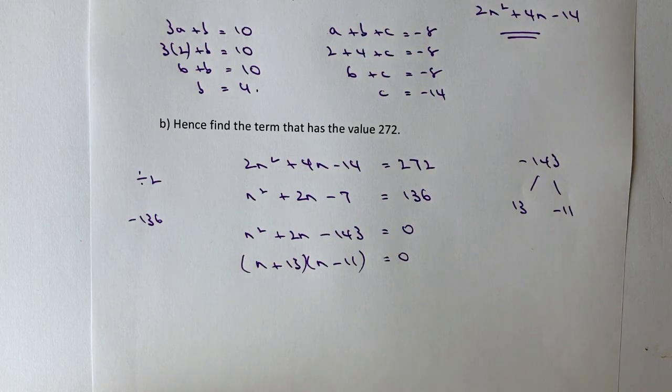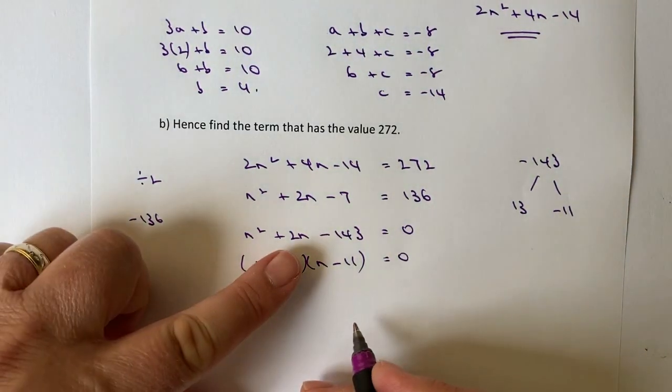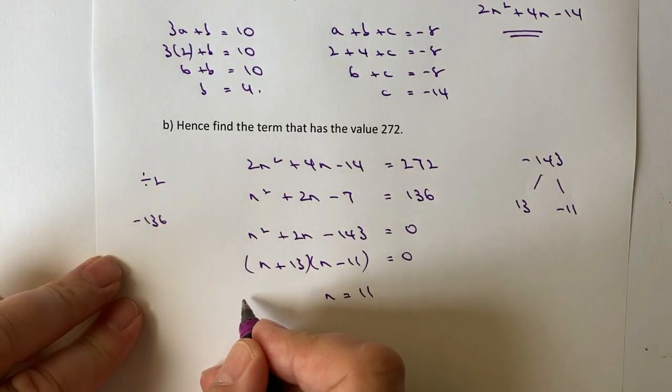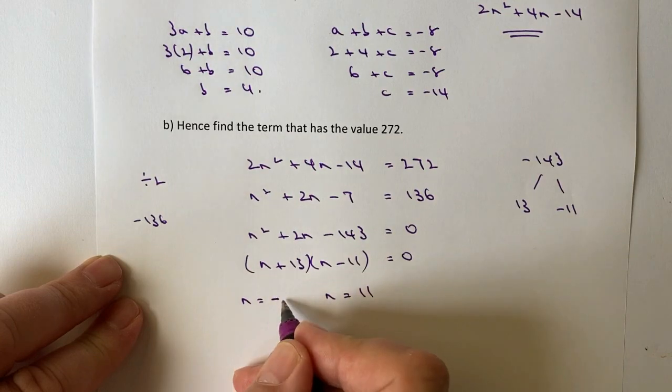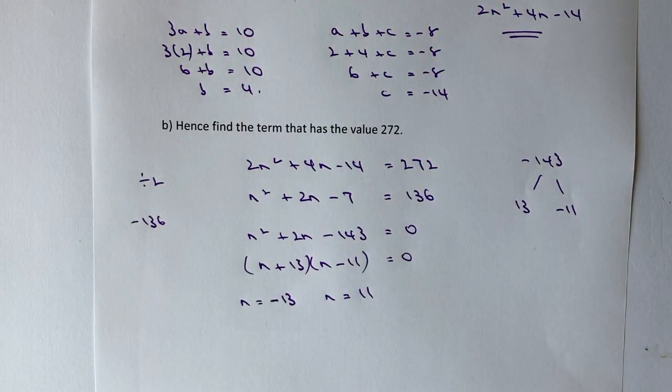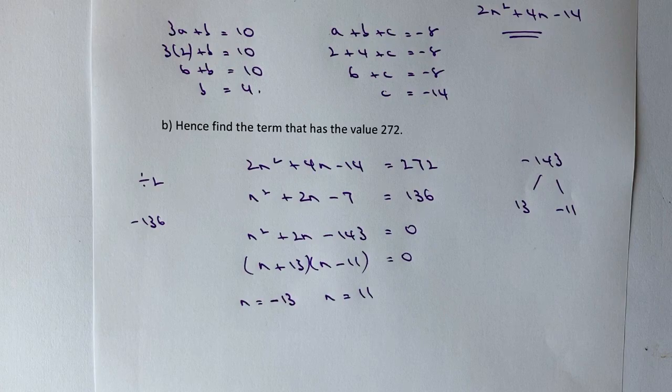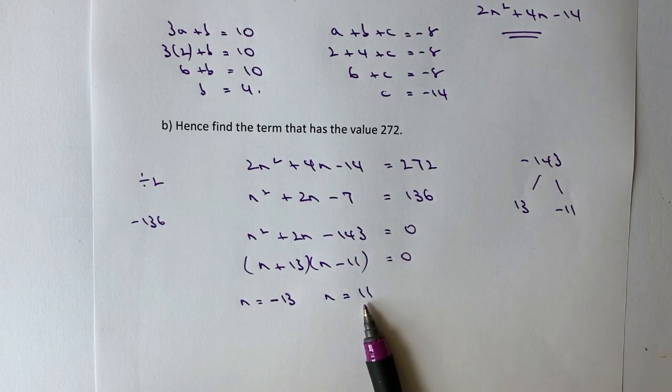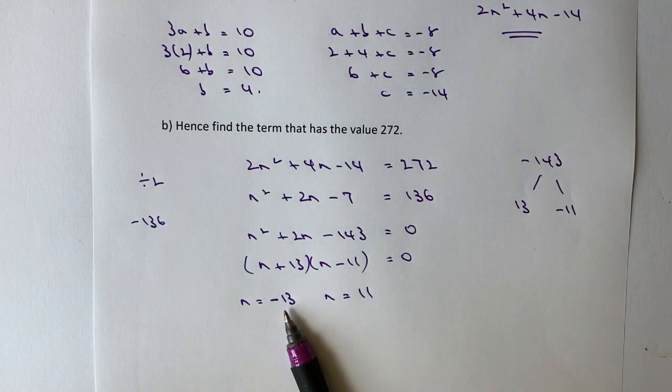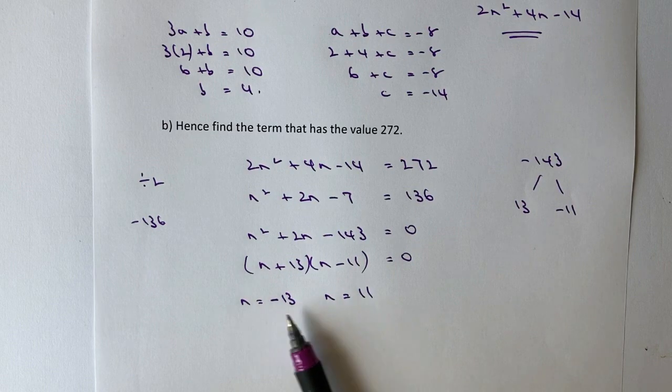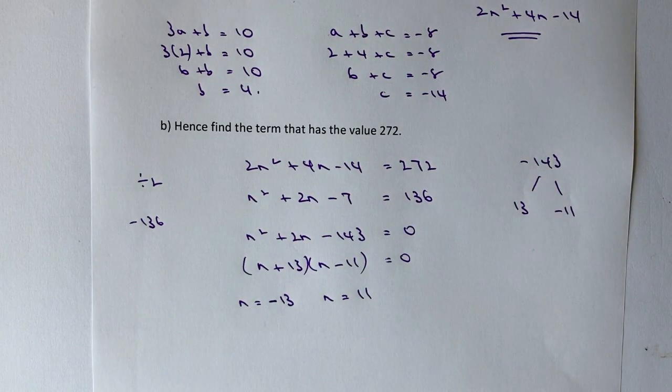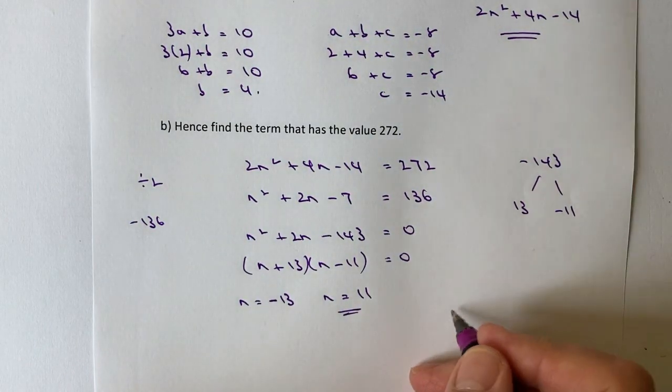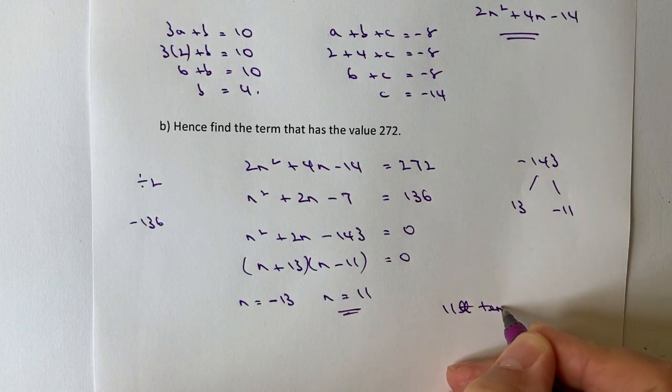So in other words, I've got two values of n. My first value of n is where n equals positive 11, and my second value of n is where n equals minus 13. So what is my value of n going to be in terms of this equation? Well, it's actually going to be this one, because I can't have a minus 13th term. I can only have, in this particular case, the 11th term. So therefore, the term that has the value of 272 is the 11th term.